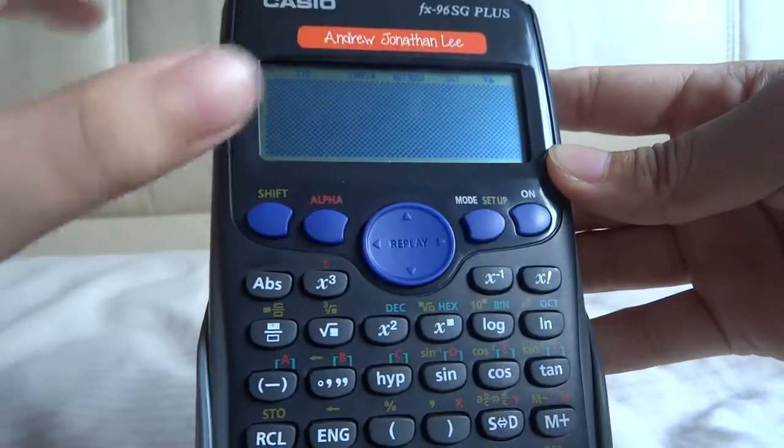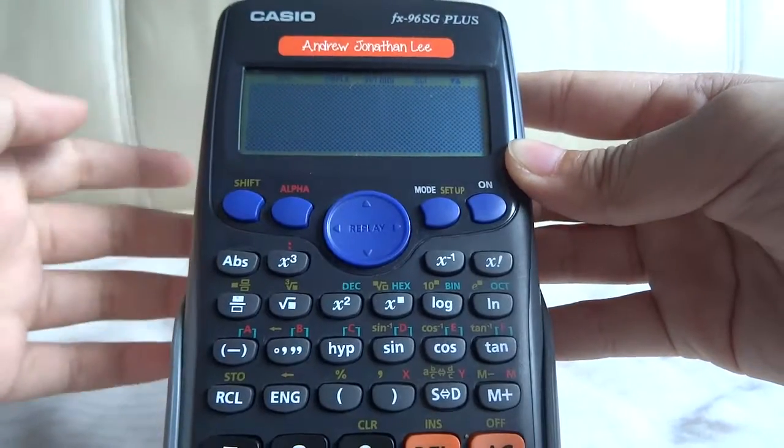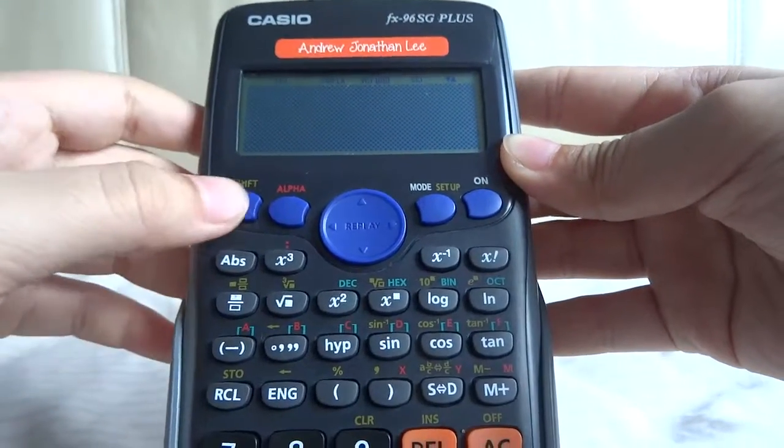And shift again, you get this other checkerboard. So, those are the five patterns you can make with this calculator.